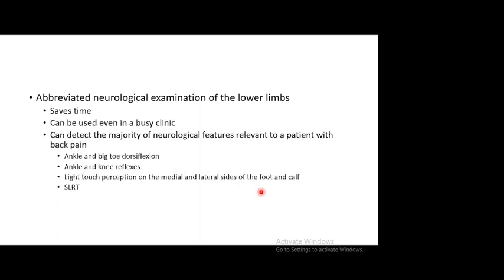The neurological examination is the most dreaded part, but an abbreviated neurological examination of the lower limbs using just four maneuvers will let you diagnose about 80% of relevant neurological deficits. These are: ankle and big toe dorsiflexion (L5/S1); ankle and knee reflexes; light touch perception on the medial and lateral sides of the foot and the calf. Along with the straight leg raise test, these cover the majority of important physical signs associated with neurological deficit in a back pain patient.